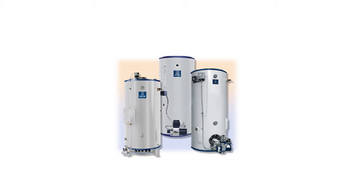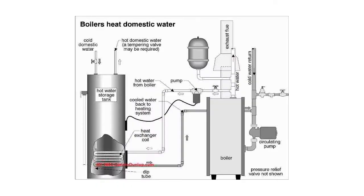Thermostats have a dial for setting the maximum water temperature. Indirect water heaters work like a direct-fired water heater, but instead of having their own burner, the indirect water heater uses the home's boiler to heat the water that passes through a heat exchanger in the storage tank. Indirect water heaters allow the burner to turn off and on less, saving energy, making them the more efficient option than a tankless coil or direct-fired water heater.